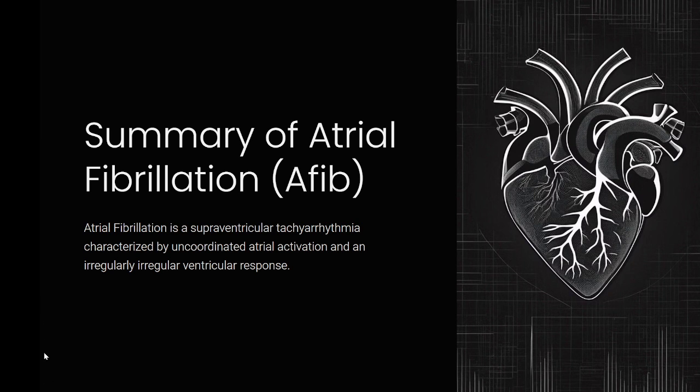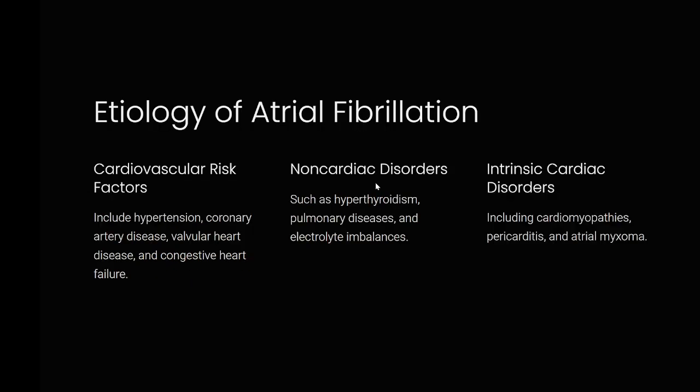Summary of atrial fibrillation (AFib). Definition: atrial fibrillation is a supraventricular tachyarrhythmia characterized by uncoordinated atrial activation and an irregularly irregular ventricular response. Etiology — cardiovascular risk factors include hypertension, coronary artery disease, valvular heart disease, and congestive heart failure. Non-cardiac disorders such as hyperthyroidism, pulmonary diseases, and electrolyte imbalances. Intrinsic cardiac disorders including cardiomyopathies, pericarditis, and atrial myxoma.